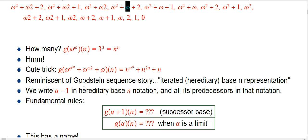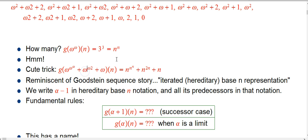The punchline is pretty simple: if you have any kind of expression involving omegas and ordinal arithmetic, just turn all your omegas into ns, and you get a very clean formula for how many distinct different functions you're going to get when you expand out f — and we've been calling that g.